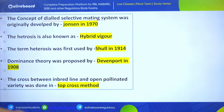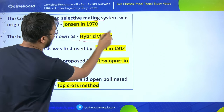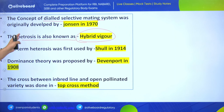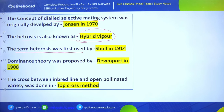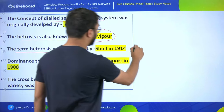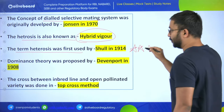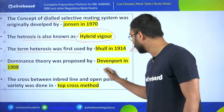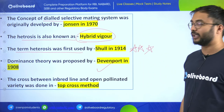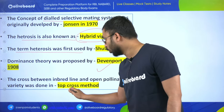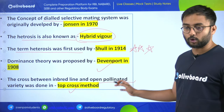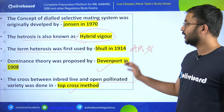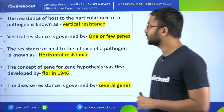Heterosis is also known as hybrid vigor. The term heterosis was first used by Shull in 1914 - this has been asked in NABARD as well as AFO. Dominance theory was proposed by Davenport in 1908. The cross between an inbred line and an open pollinated variety is done in the top cross method.